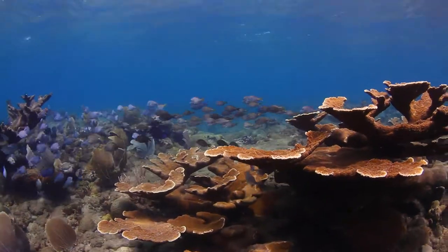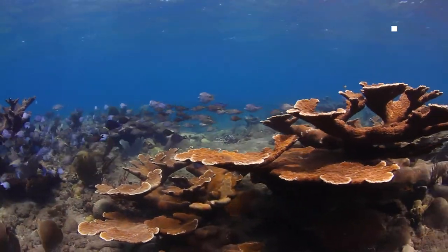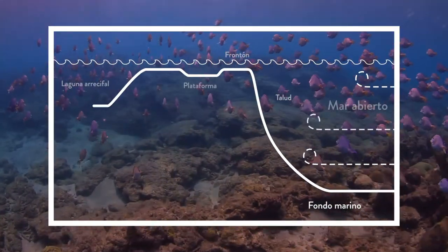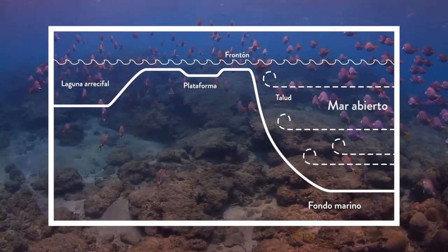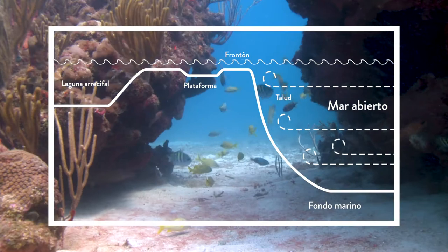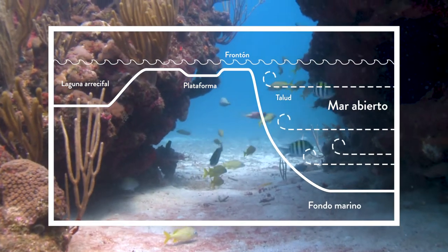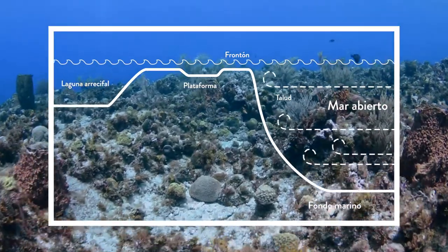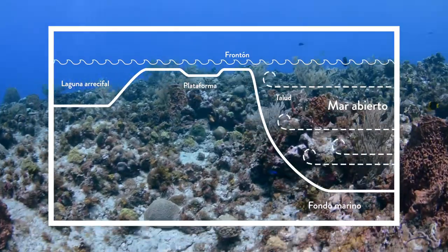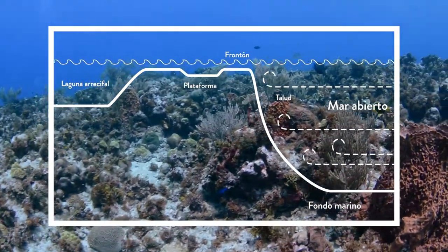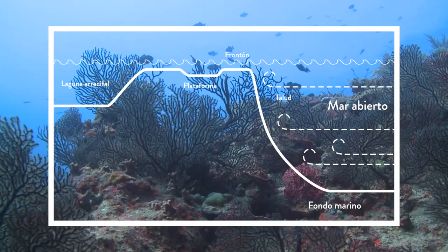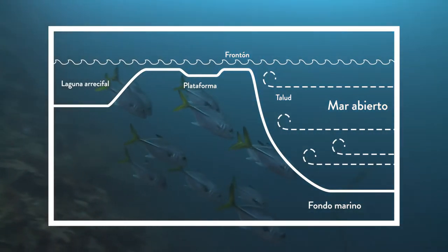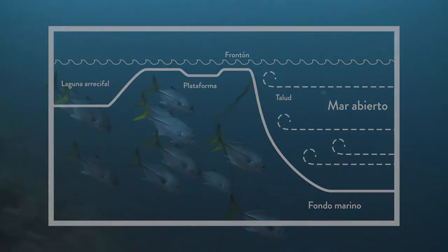La estructura del arrecife, si la vemos desde la orilla hacia el mar abierto, tiene una laguna arrecifal con fondo arenoso y aguas calmadas, la plataforma que puede estar cerca de la superficie del agua, y el frontón y el talud de frente a las aguas más profundas.